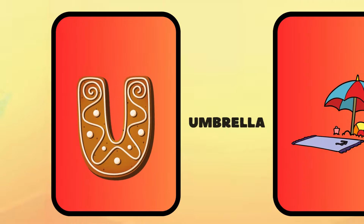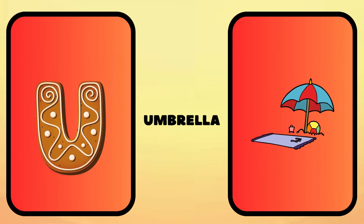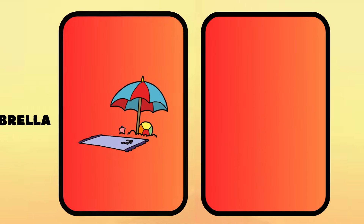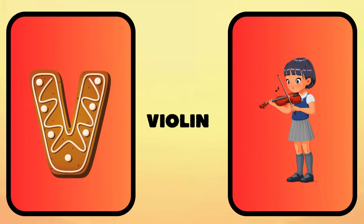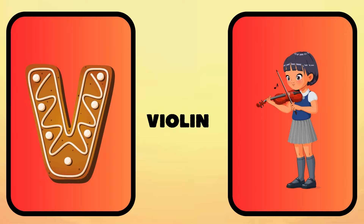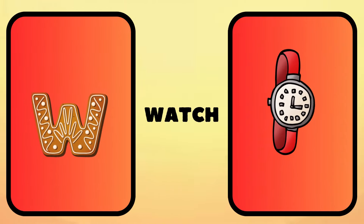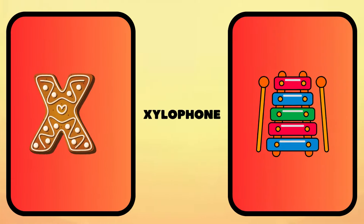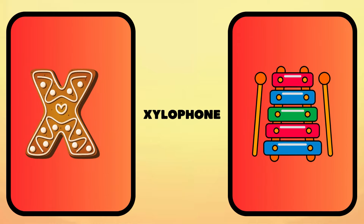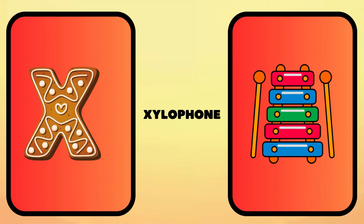U is for umbrella, u-u-umbrella. V is for violin, v-v-violin. W is for watch, w-w-watch. X is for xylophone, z-z-xylophone.